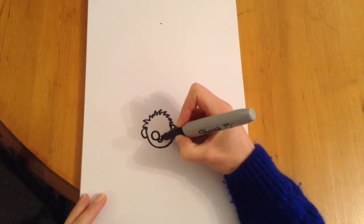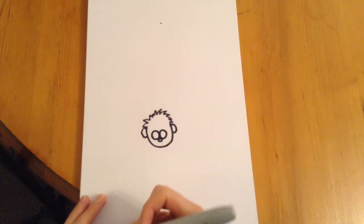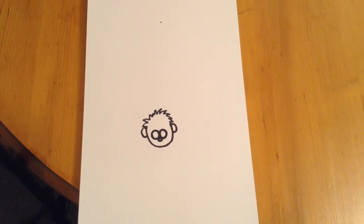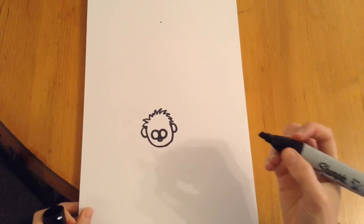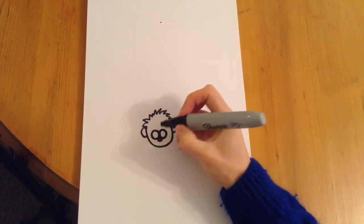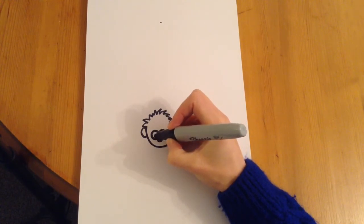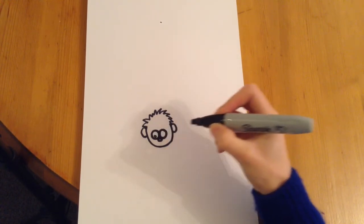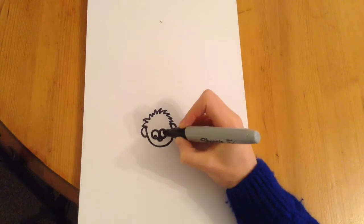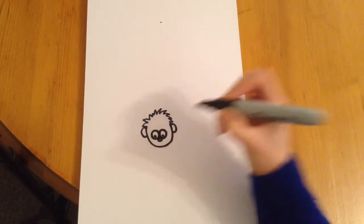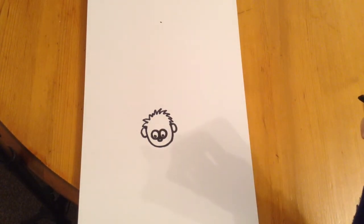And some big monkey eyes, so just do two circles, one circle there and another circle next to it like so. Now the monkey will really come to life when we give him some eyes, so let's just draw the little pupils, little round dots like that, leave the center with a tiny little bit of white. So he looks like he's coming to life.